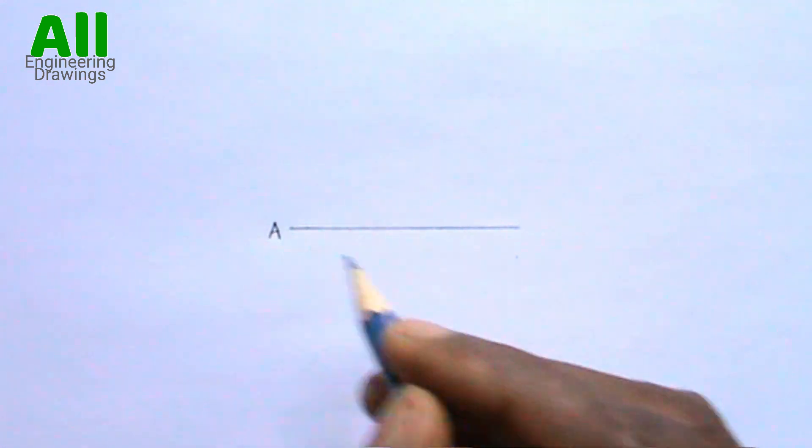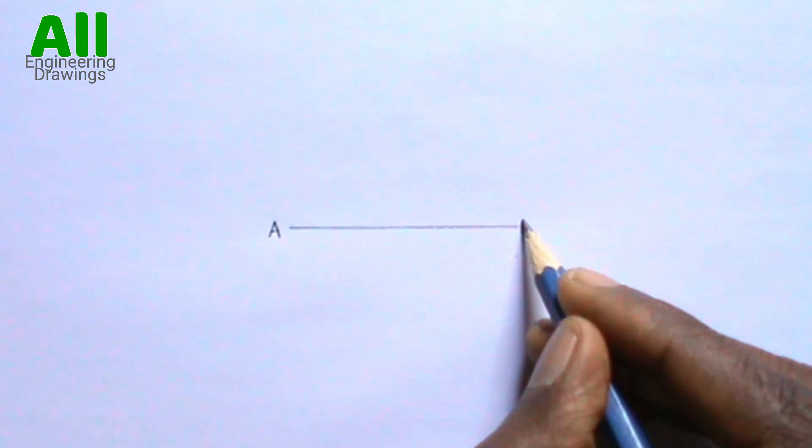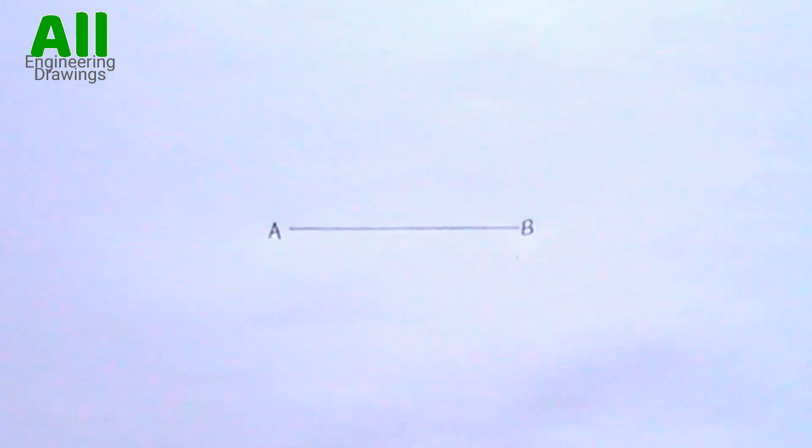You can label the line. After drawing the line to the required length, mark three points on the line.